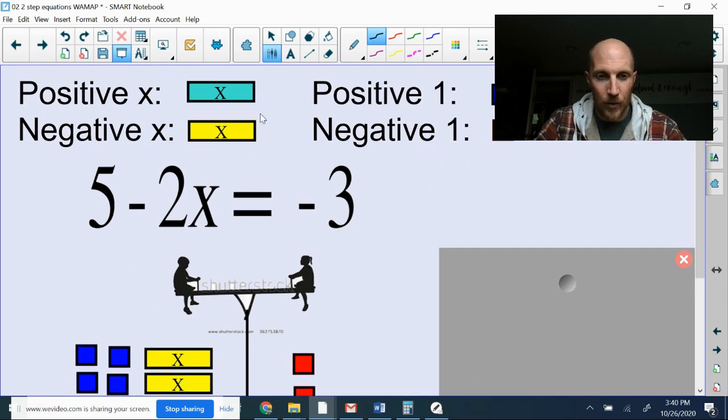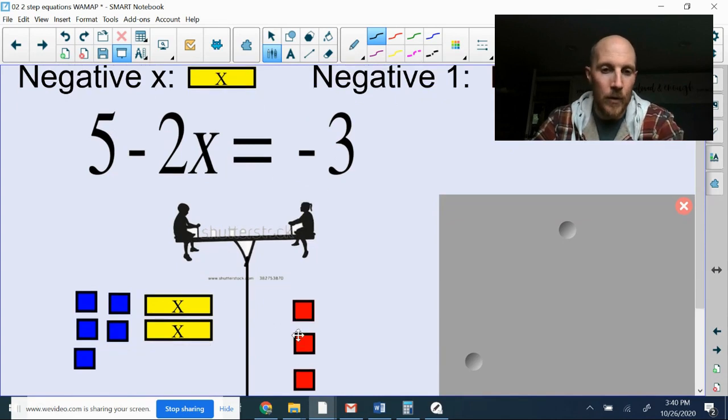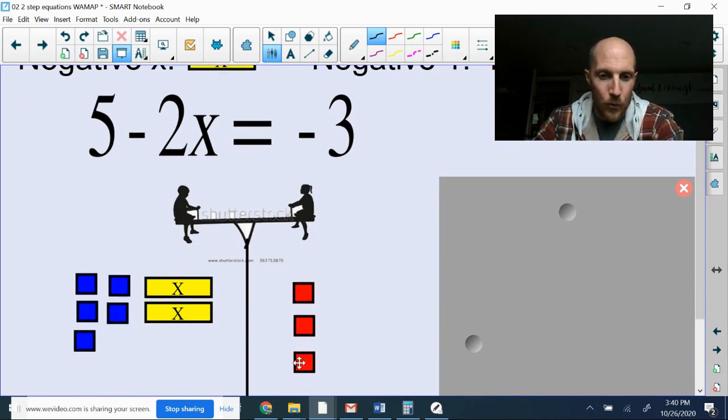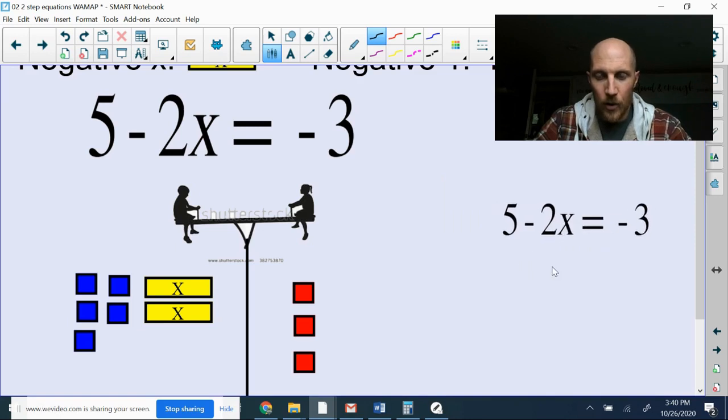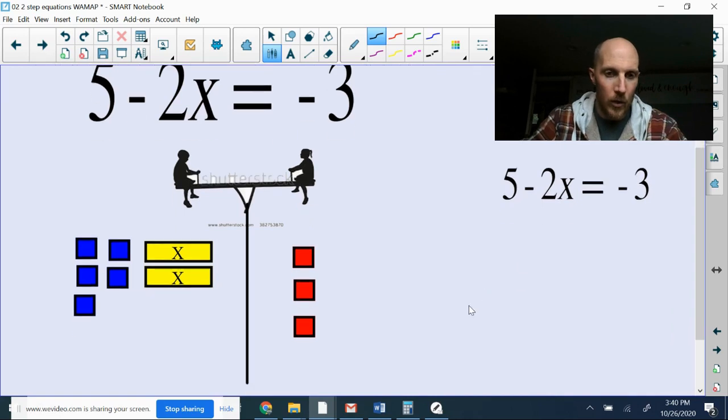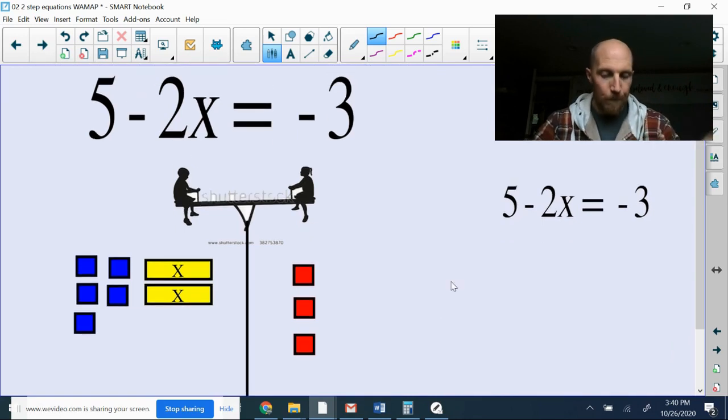So the blue squares, those are positive ones. Yellows are negative x's. So since there's negative 2x, I'll have two of those yellow x rectangles. And on the other side of the teeter-totter, the reds are negative 1s. So since it's negative 3, I got three of them. All right. So I'm going to keep the equation over on the right edge here so we can see just what's happening algebraically along with this illustration.